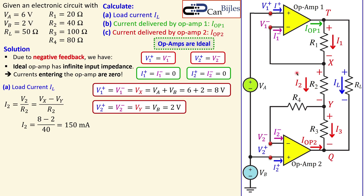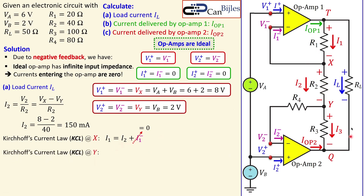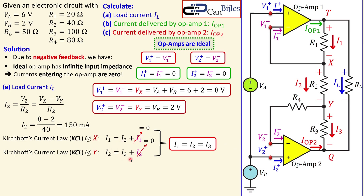Using Vx and Vy: I2 = (8 - 2) / 40 = 150 mA. Now applying KCL at node X: I1 enters and produces I2, but I1- into the op-amp is zero, so I1 = I2. Applying KCL at node Y: I2 produces I3, and I2- is zero, so I2 = I3. Combining these two equations: I1 = I2 = I3. This means R1, R2, and R3 are effectively in series — no current flows in the op-amp input branches.